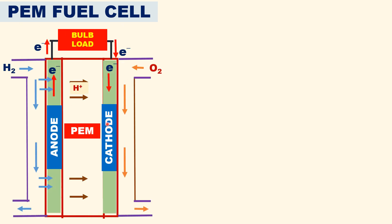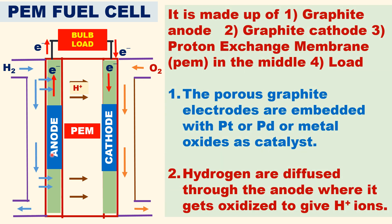Let us now see the construction of the hydrogen-oxygen PEM fuel cell. This is the experimental setup and construction. It is made up of a porous graphite anode and a porous graphite cathode, with a proton exchange membrane in the middle, connected to a load. The porous graphite electrodes are embedded with — or impregnated with — platinum or palladium, or any metal oxides, as a catalyst.